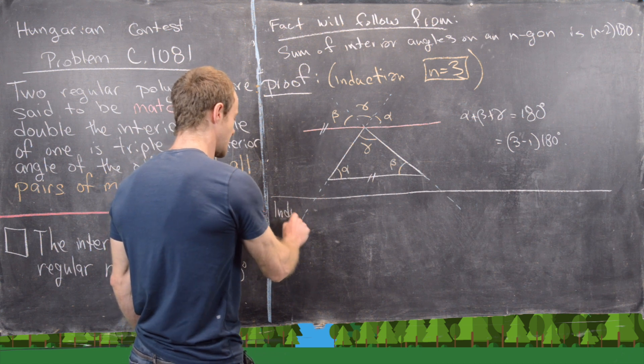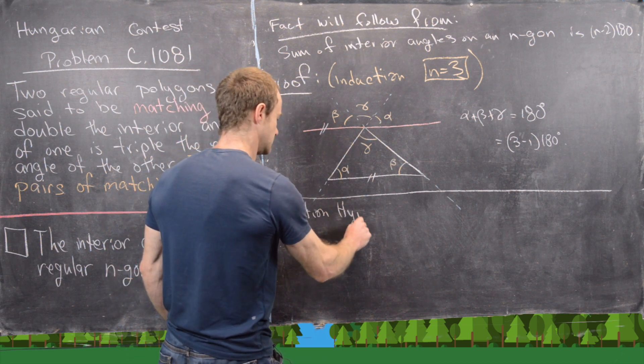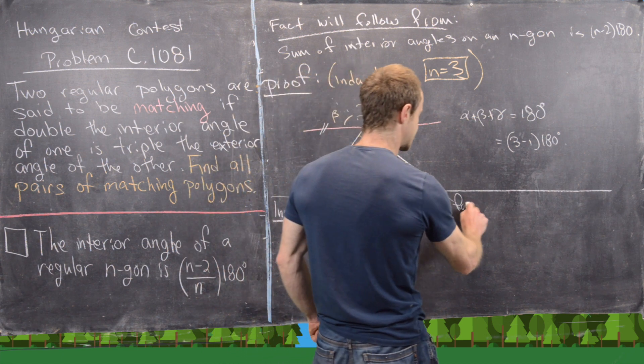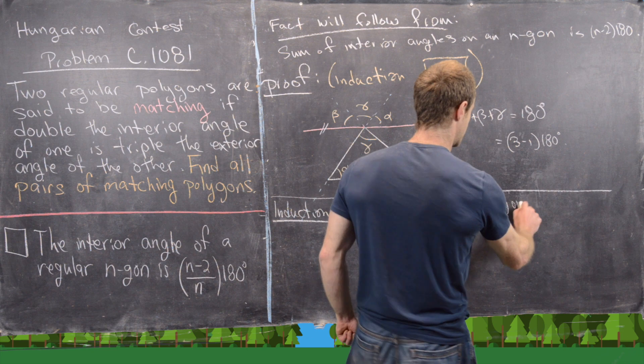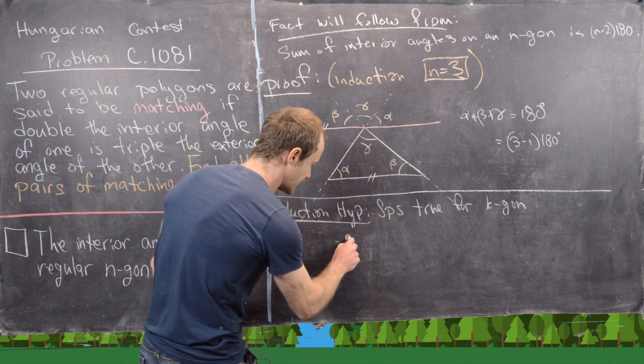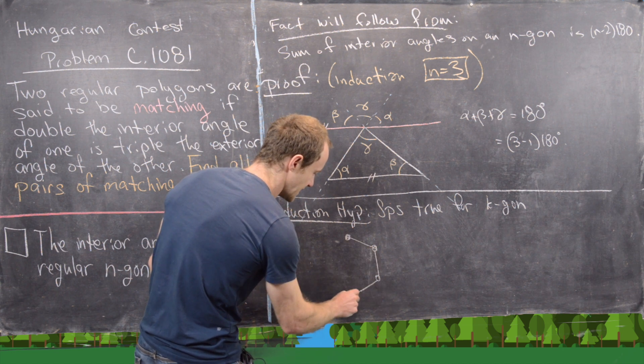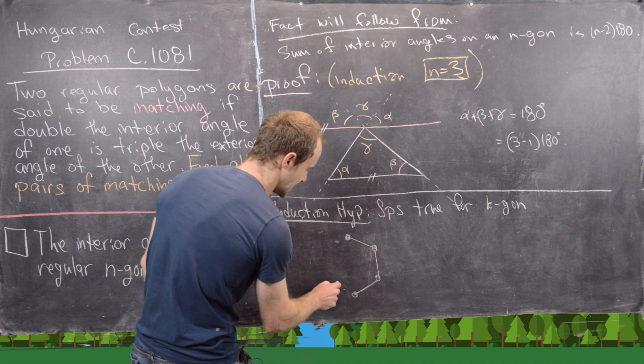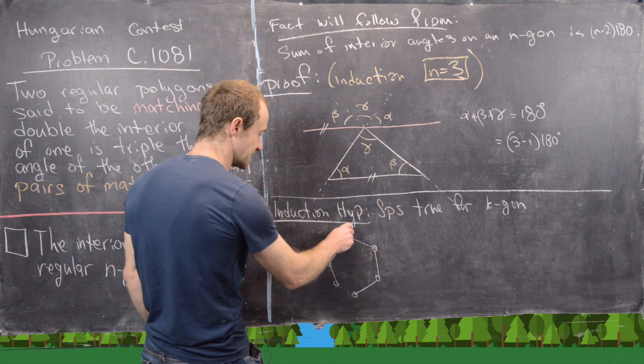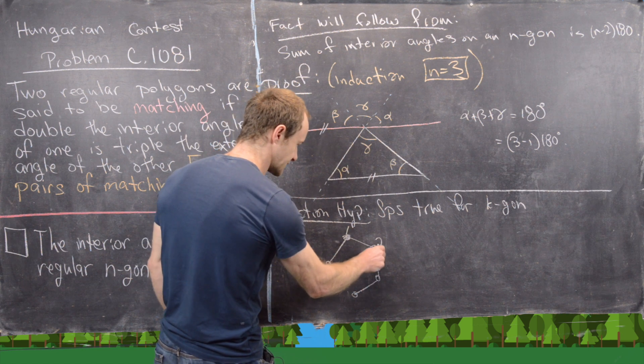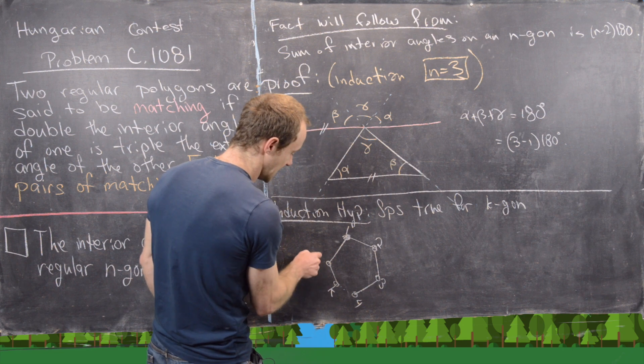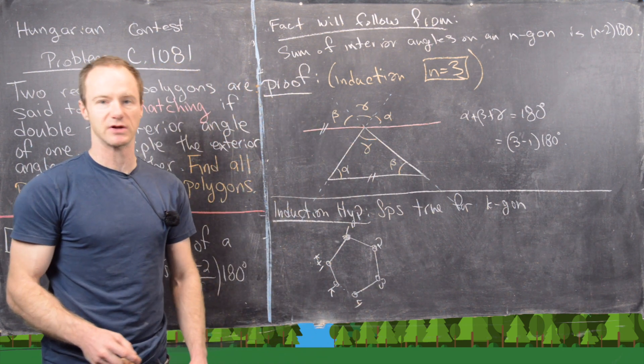So now let's go ahead and work from this. Let's make our induction hypothesis. In other words, we're going to suppose this is true for some k-gon, and then consider a k+1-gon. So I'll draw a k+1-gon in the following way. Let's say this is vertex number 1, this is vertex 2, 3, 4, and then this is vertex k, and this is vertex k+1.